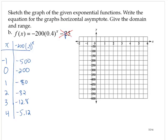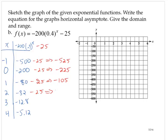Now let's remember the minus 25. So now let's subtract 25. So that's negative 525. Negative 225. Negative 105. Negative 57. Negative 37. Negative 39.8. I didn't subtract 25. Sorry about that. That should be a negative 37.8. Negative 5.12 minus 25. Negative 30.12.